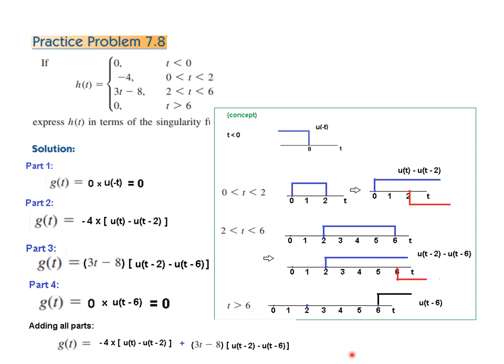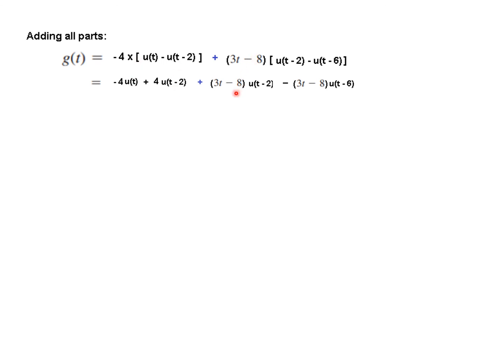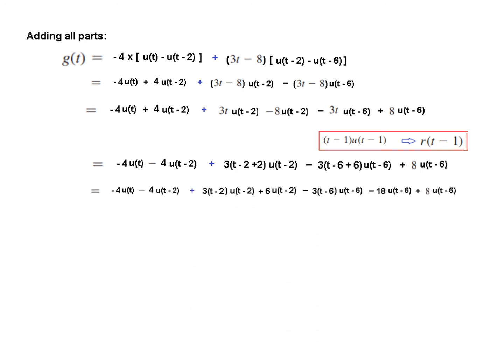We simplify further to get into step and ramp function form. Opening all brackets and separating into individual terms, we can see we have terms multiplied by t, which can be converted to ramp functions. For the t·u(t-6) term, we write t as (t-6) + 6, giving 3(t-6)·u(t-6) + 18·u(t-6). Similarly for the t·u(t-2) term, we write t as (t-2) + 2, giving 3(t-2)·u(t-2) + 6·u(t-2).